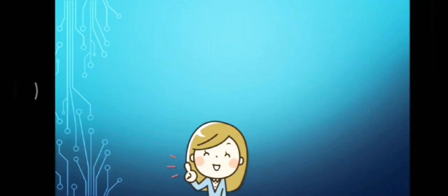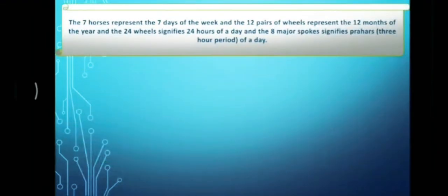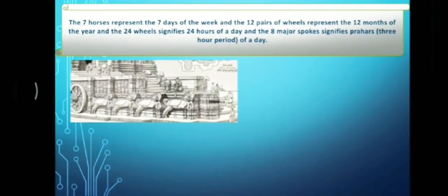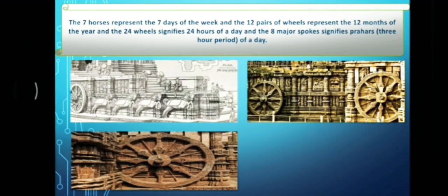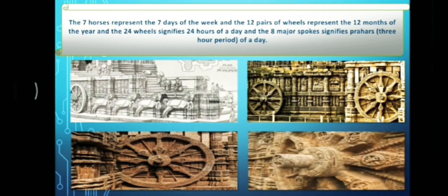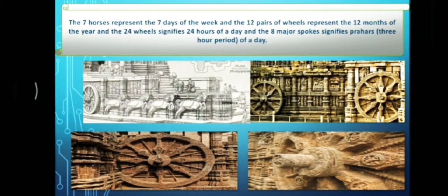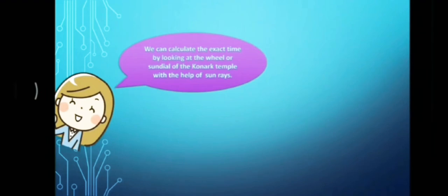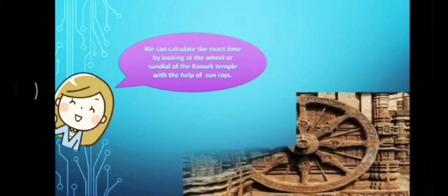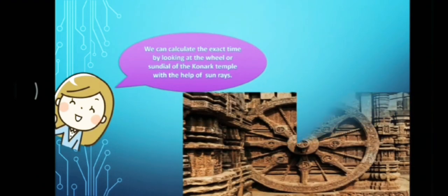Maths behind the Konark Sun Temple. The 7 horses represent the 7 days of the week. 12 pairs of wheels represent 12 months of the year. 24 wheels signifies 24 hours of a day, and 8 major spokes signify 3-hour periods of a day. And do you know, we can also calculate the exact time by looking at the wheel or the sundial of the Konark temple with the help of sun rays.